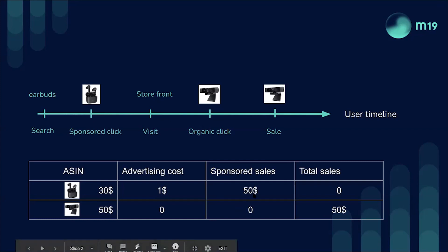The sponsored sales that will be reported are related to the amount of the real purchase, which is not the product that was clicked. So when we look at the PPC reports, we will see $50 reported in sponsored sales, even though the earbuds only cost $30. And when we look at the total sales report — the business report per ASIN for the earbuds — we will see $0, because that is not the product that was purchased at the end.